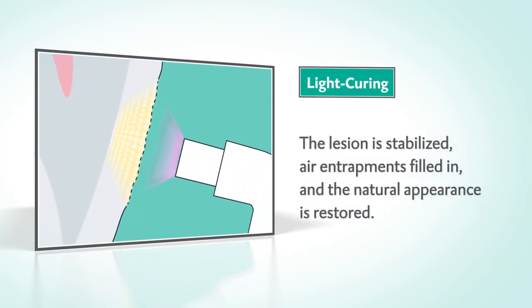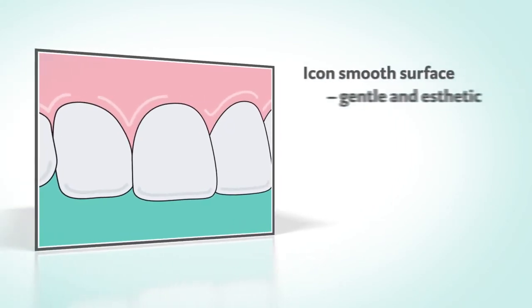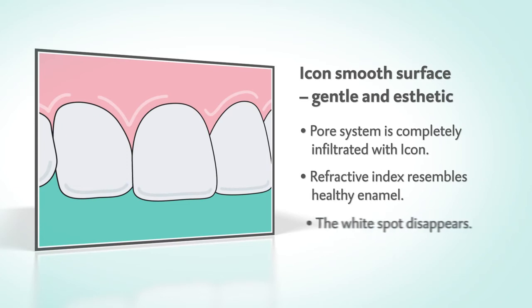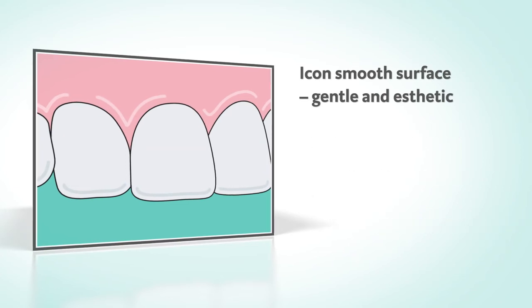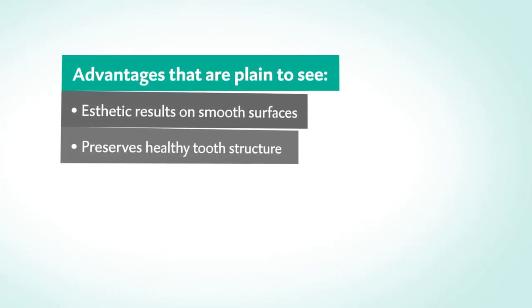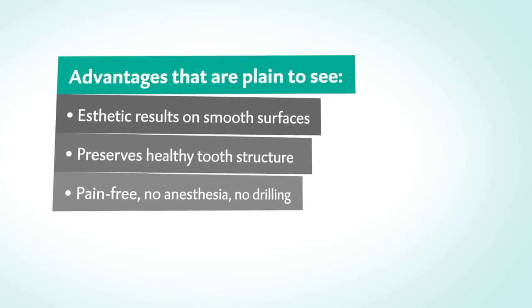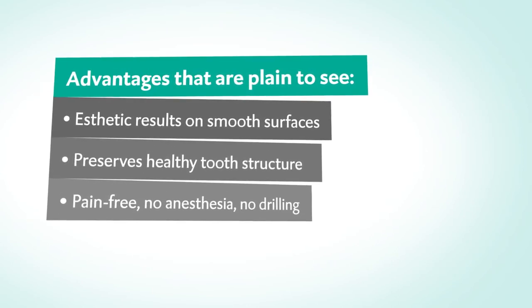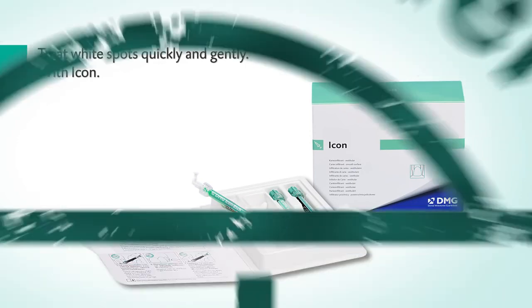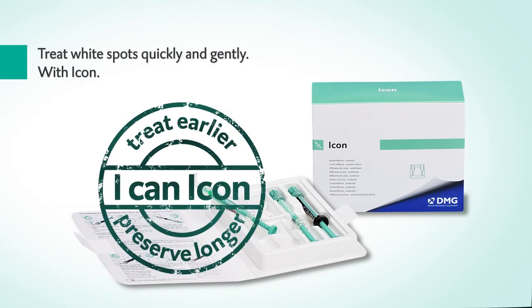After the final light curing, the lesion is stabilized and the natural appearance is restored. The carious pore system is infiltrated and blended in with healthy enamel — the white spot disappears. Substance-friendly, aesthetic, and pain-free. Icon Smooth Surface makes treatment easy for both dentist and patient. Treat white spots quickly and gently with Icon by DMG.